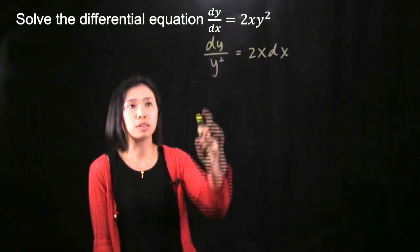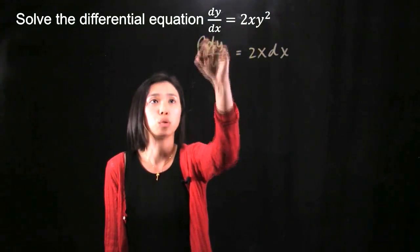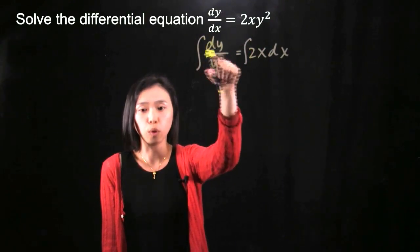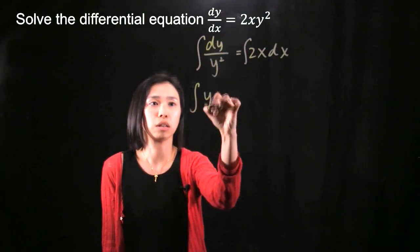And then whenever we see this dy and dx, what we can do is integrate them. So we need to integrate this 1 over y squared, meaning that we are integrating this.